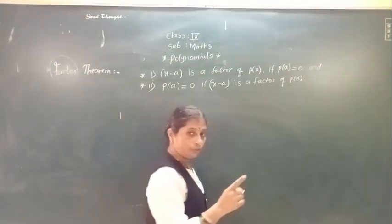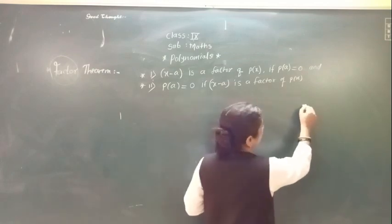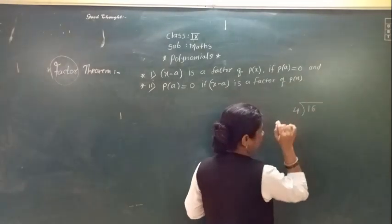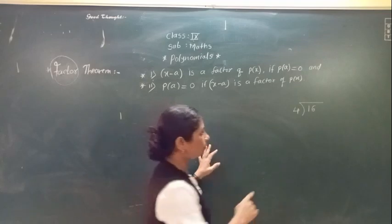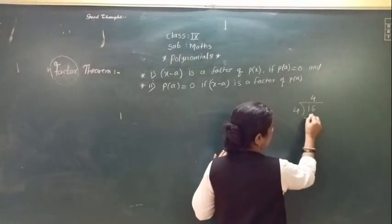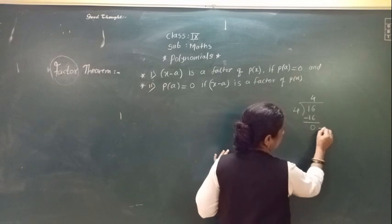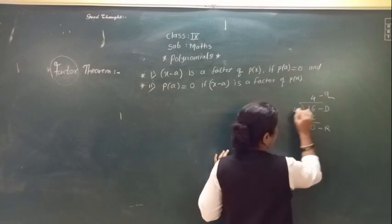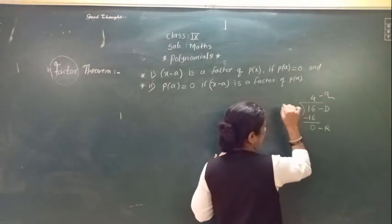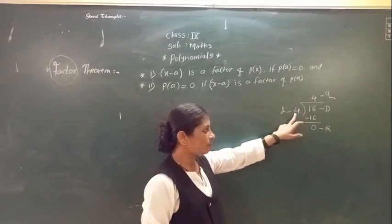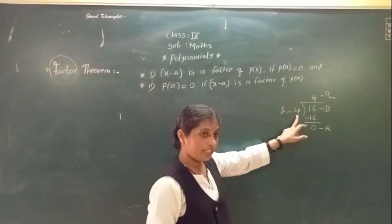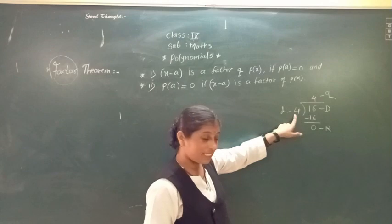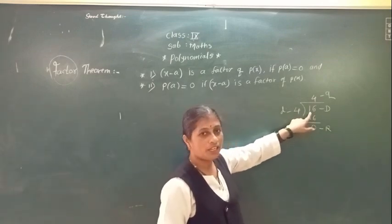So what does factor mean? If we see a simple division — for example, 16 divided by 4 — you will get 4, since 4 fours are 16. You will get remainder 0. This is your dividend, this is your quotient, and this is your divisor.